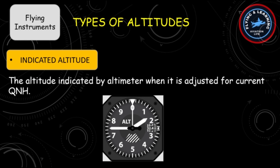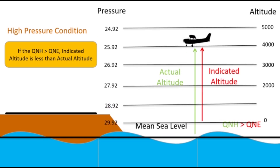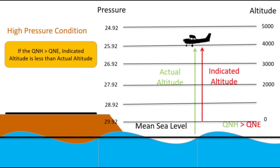The next type is indicated altitude. It is the altitude indicated by the altimeter when it is adjusted for the current QNH. In standard conditions, actual altitude equals indicated altitude. However, if the outside pressure is higher than the standard settings, the isobar will move upward and the pressure at sea level will be higher than 29.92. If the altimeter is still adjusted to 29.92, the indicated altitude will be lower than actual altitude. The opposite is the case in low pressure settings outside.